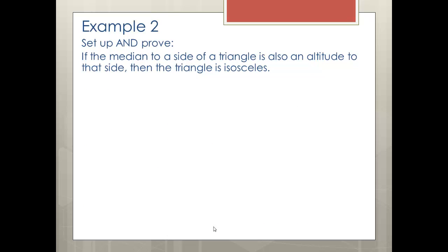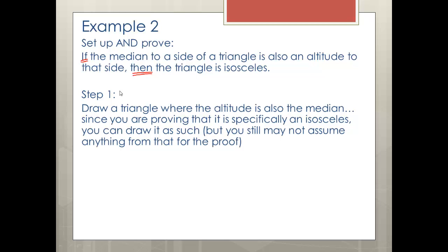Okay, now we're being asked to set up and prove. So if the median to a side of a triangle is also an altitude to that side, then the triangle is isosceles. Okay, so that last part is what we're trying to prove, the triangle being isosceles. And what we're given is that a segment is a median and is also an altitude. So we draw a triangle where the altitude is also the median. Since we're proving that it's specifically an isosceles, we can draw it that way. But we can't assume anything from that for the proof. So even though it looks like an isosceles, we may draw it that way. We can't assume that the two sides of it are congruent. You can draw it that way, but don't assume that from it. And again, write in the given and prove it. And then complete the proof.